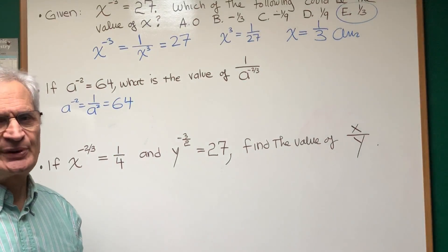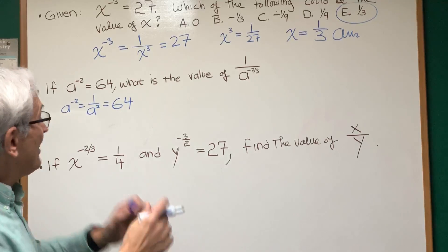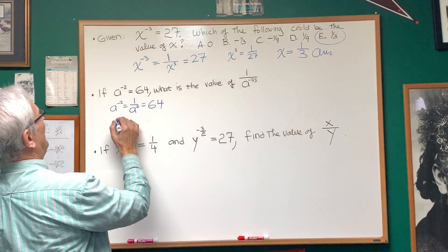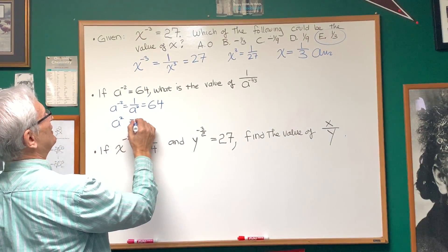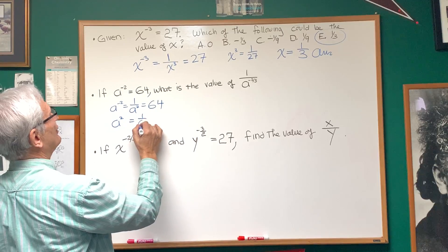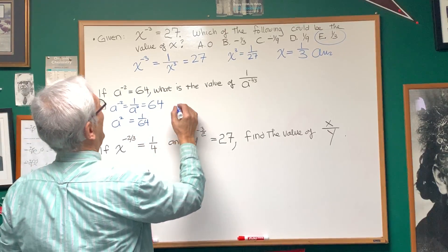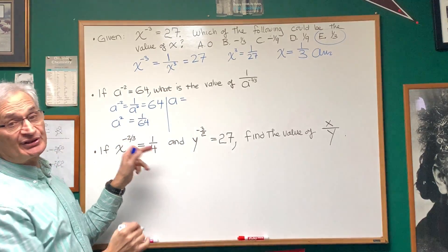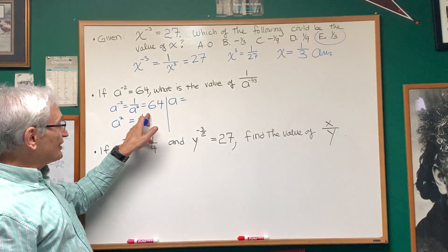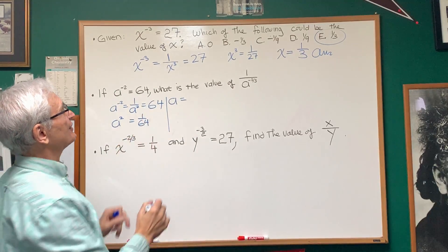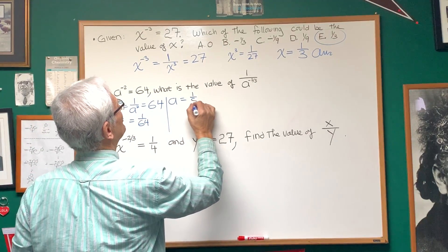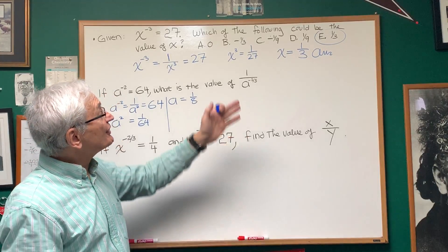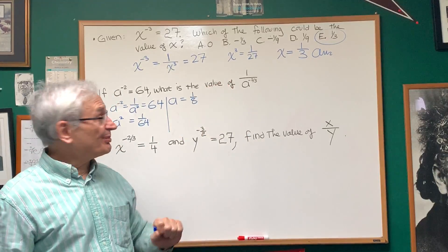Let's solve that like we did the previous problem. We just flip both sides, and this becomes a squared equals one over 64, and we take the square root of numerator and denominator. Square root of one is one, square root of 64 is eight, so a is equal to one eighth.